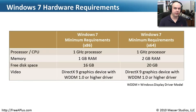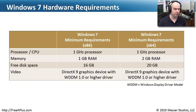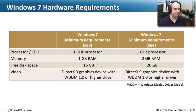The hardware requirements for Windows 7 are relatively low for modern computers. The minimum requirements for the 32-bit version are: a 1 GHz processor, 1 GB of RAM, 16 GB of free hard drive space, and a DirectX 9 graphics device with WDDM 1.0 or higher. For the 64-bit version, requirements are almost the same, but you need 20 GB of disk space and 2 GB of RAM. Graphics requirements are identical between the 32-bit and 64-bit versions.